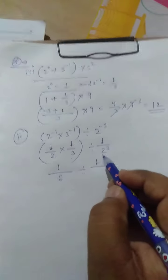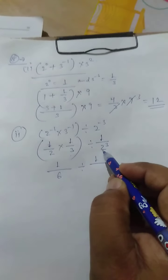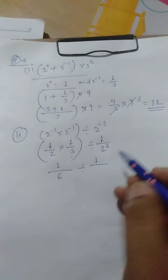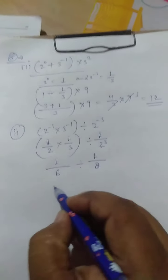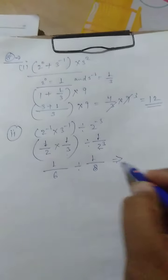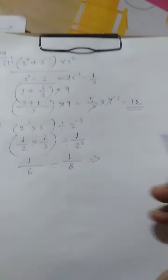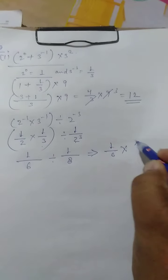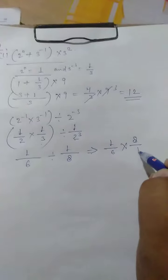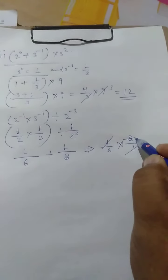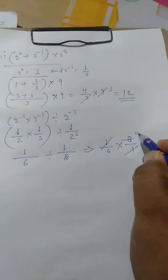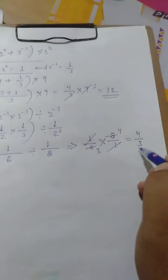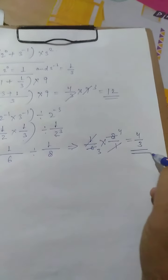So we have 1 upon 2 power 5. It means 2 multiply 3 times: 2, 4, 8. Then it is equal to 1 upon 6 into 8 upon 1 — 1 cancels, giving us 4 upon 3. So 4 upon 3 is the answer of this question.